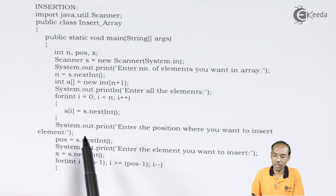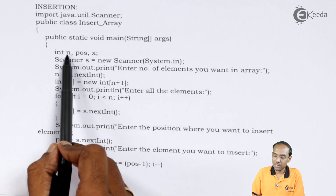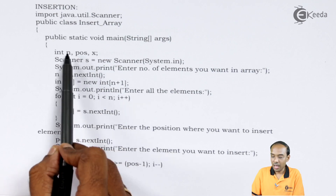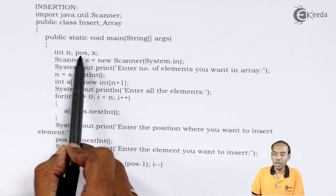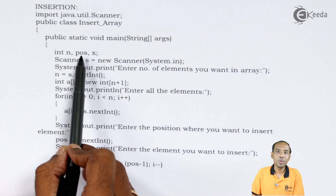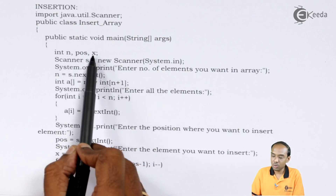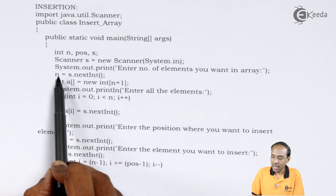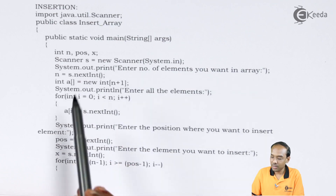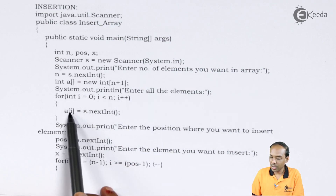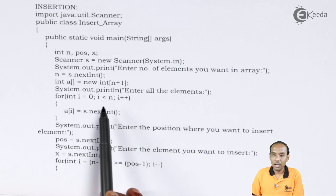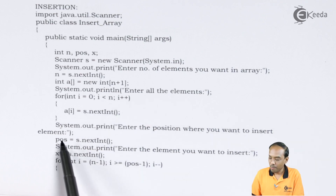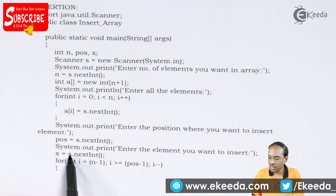Let's revise the whole thing. We have used three variables: n, pos, and x. n defines the number of elements in the array. pos is the position at which we are going to insert the value. x is the exact value of the element we want to insert. We used n = s.nextInt() for array size, a[i] = s.nextInt() to get elements, pos = s.nextInt() for position, and x = s.nextInt() for the insert element.